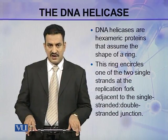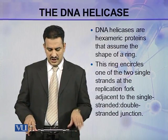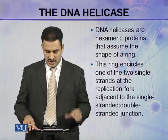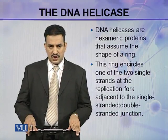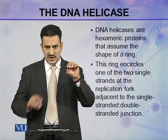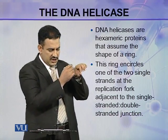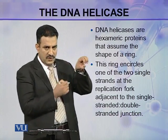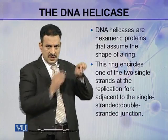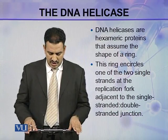DNA helicases are hexameric proteins. That is, they contain six types of subunits that assume the shape of a ring. This DNA helicase is in the form of a ring, and six subunits are present in this ring.